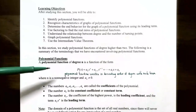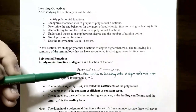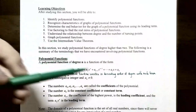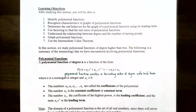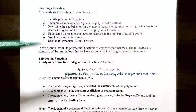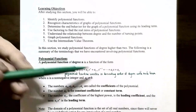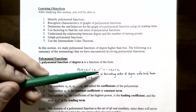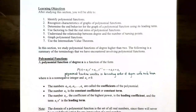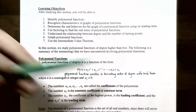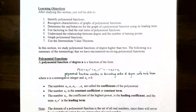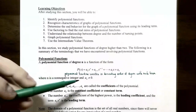Polynomial functions of degree n will be of this form: p(x) equals a sub n times x to the n, plus a sub n minus 1 times x to the n minus 1, plus several terms leading down to a sub 1 times x plus a sub 0. If it's a degree n polynomial function, the highest power on the variable x will be n, and a sub n is the coefficient of that term. n must be a non-negative integer and it cannot be 0.